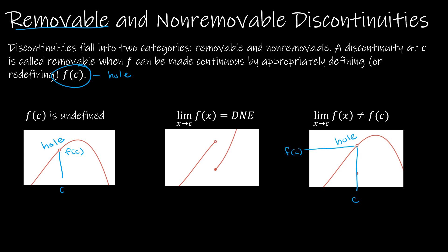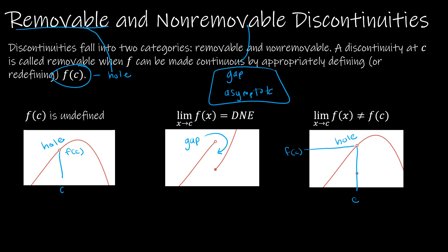What happens when I don't have a removable discontinuity? Obviously it's called non-removable, and that typically happens when there is a gap — sometimes called a jump — or if you have an asymptote. So removable is where I have a hole and I can just fill in that hole. Non-removable is where I have a gap where I'd have to actually redefine the function, or an asymptote where the function is essentially not defined at that point.